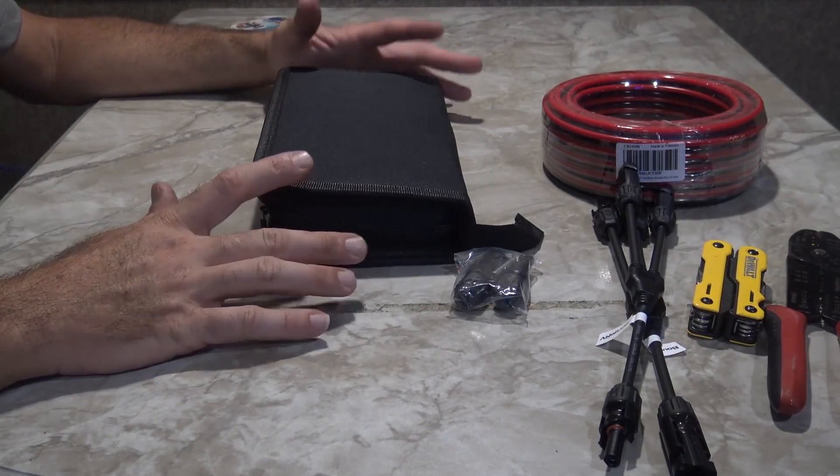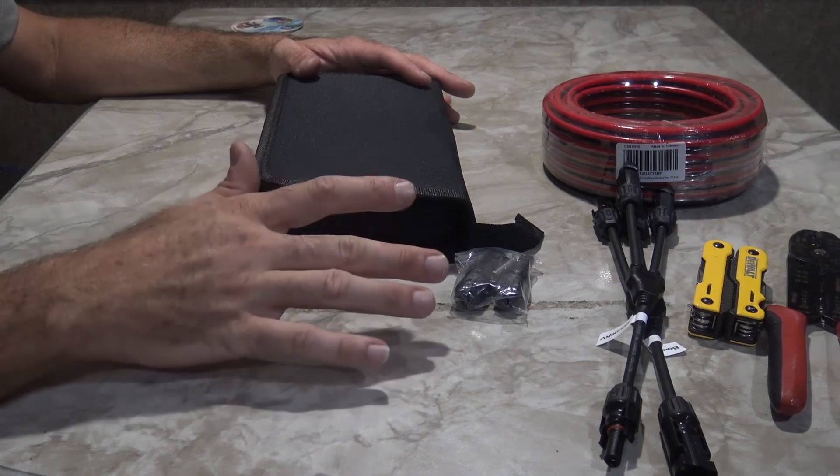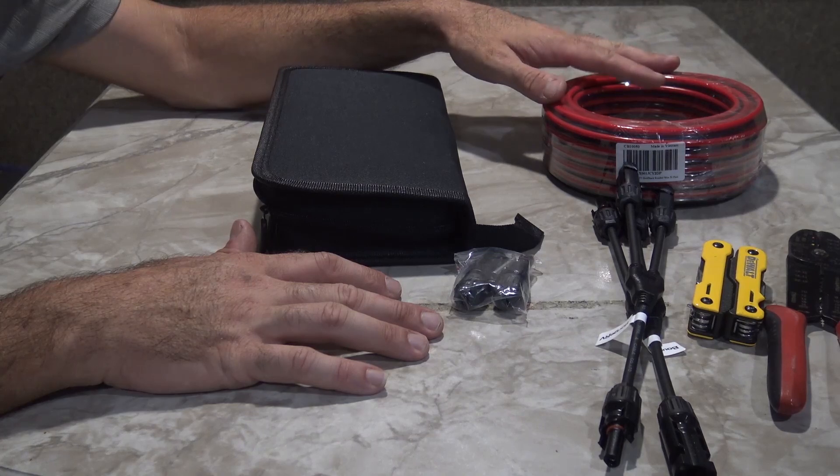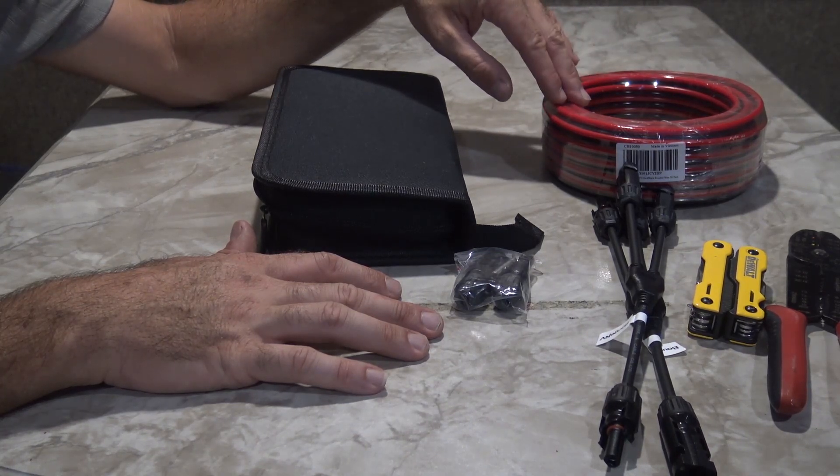I'll show you a couple things here on the table. So I got 50 feet of red and black 10 gauge wire on Amazon. This is red black bonded 10 gauge solid copper.